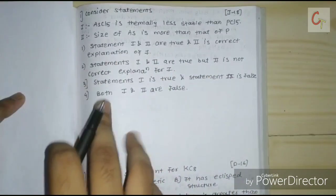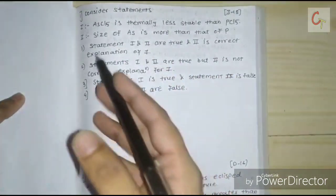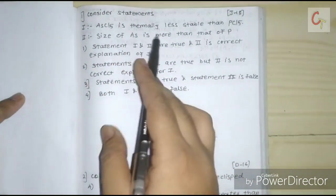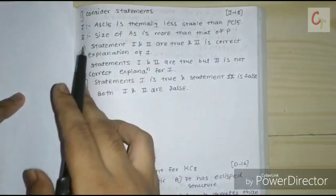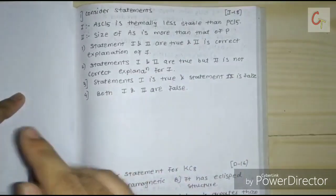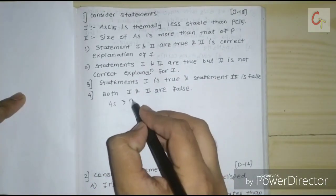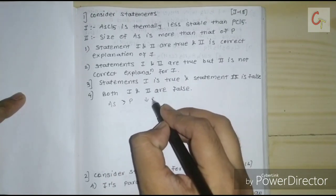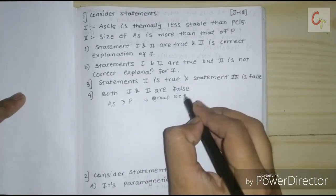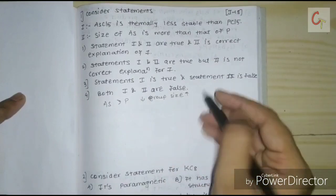Statements are given and we have to choose the correct option. The first statement is: arsenic pentachloride is thermally stable than PCl5, and the size of arsenic is more than that of phosphorus. Arsenic is greater in size than phosphorus because as we go down the group, size increases — so statement two is correct.